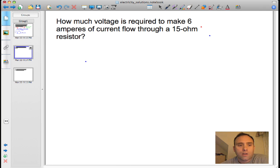It reads how much voltage is required to make 6 amperes of current flow through a 15 ohm resistor.